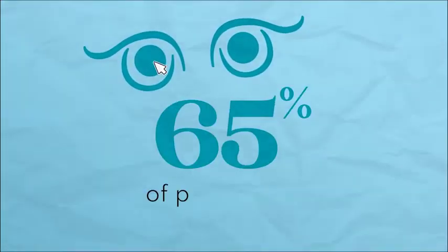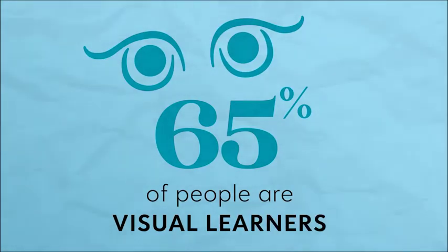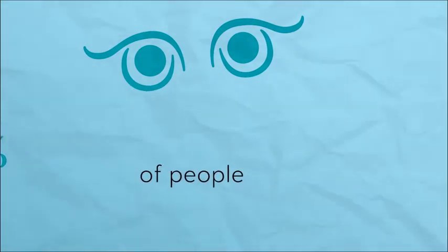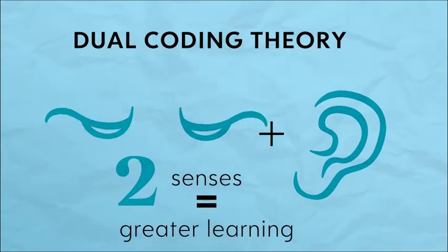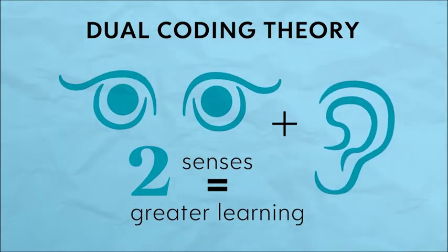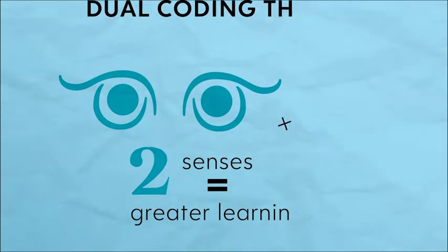Considering 65% of people are visual learners, we can leverage this along with Dual Coding Theory, which suggests when two senses are stimulated at once, there's a greater potential for learning.